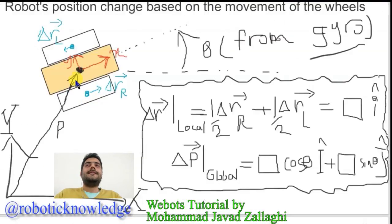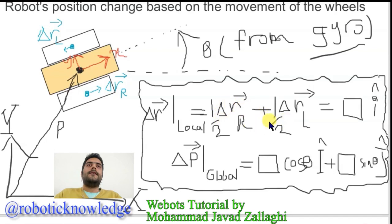Easily I can say that the overall change of this interesting point is equal to 1 over 2 times delta R for the right wheel, plus 1 over 2 times delta R for the left wheel.